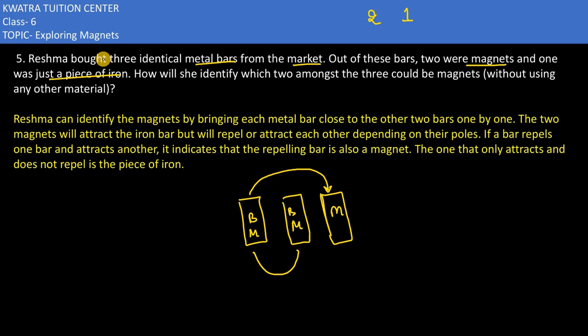So this is why you would understand that the one that only attracts and does not repel is the piece of iron. Because with a bar magnet, the metal can attract but it cannot repel. So you would get to understand which one is our magnet and which one of them is metal bar.